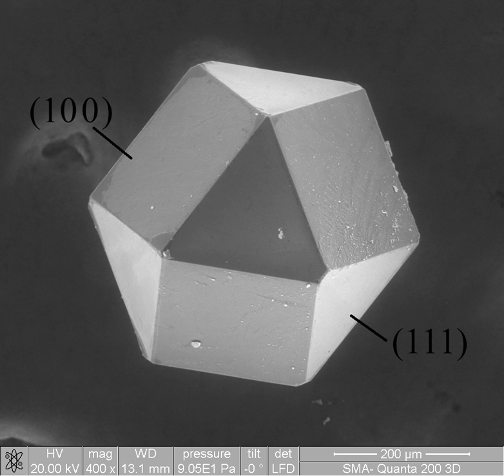Biomaterials science encompasses elements of medicine, biology, chemistry, tissue engineering, and materials science. Biomaterials can be derived either from nature or synthesized in a laboratory using a variety of chemical approaches using metallic components, polymers, bioceramics, or composite materials.